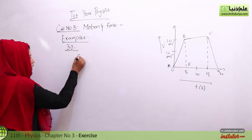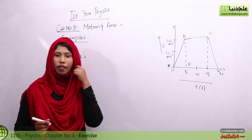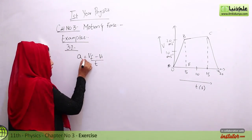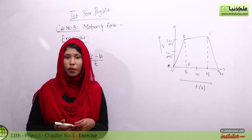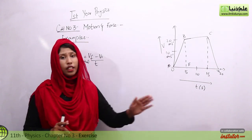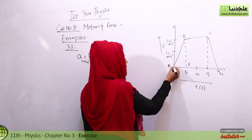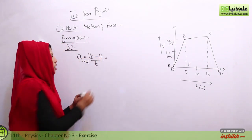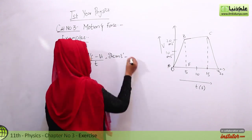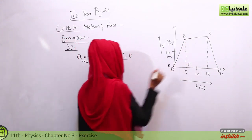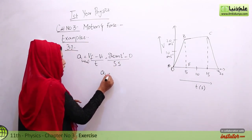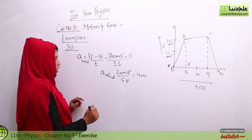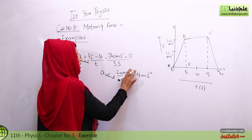First of all, if we want to find the initial acceleration, then the formula is change in velocity over time. For initial acceleration, the car started from zero and its velocity increased to 20 meters per second. The initial velocity is zero and the time covered is 5 seconds. So the initial acceleration is 20 over 5, which gives us 4 meters per second squared.